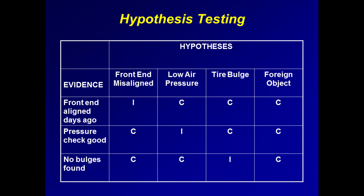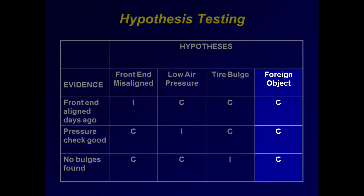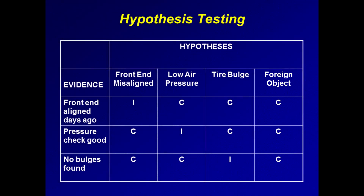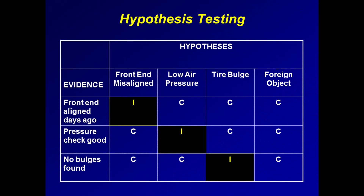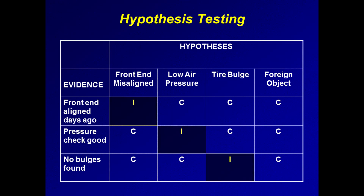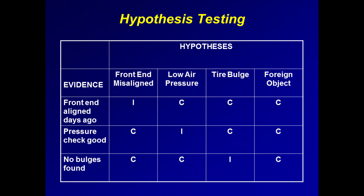Use the reasonable man test, or beyond a reasonable doubt test. At this point, our best guess must be that a foreign object is causing the shuddering and vibration. Why? Because we've eliminated the first three hypotheses — we've disproved them — and that is precisely the aim of hypothesis testing: to disprove, not to prove a hypothesis. Of course, we haven't proven that a foreign object is in fact the cause, but at this point it remains the most likely hypothesis.